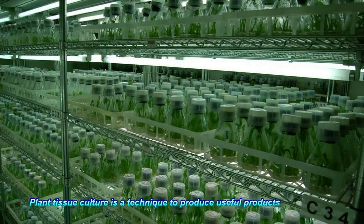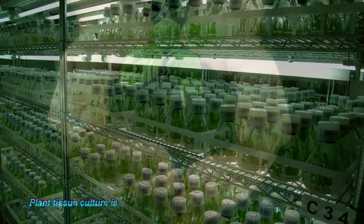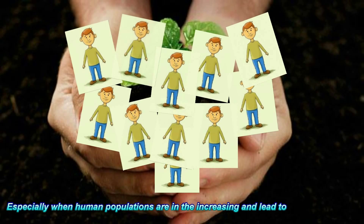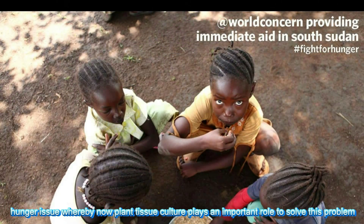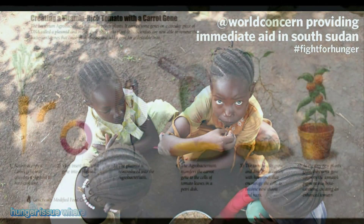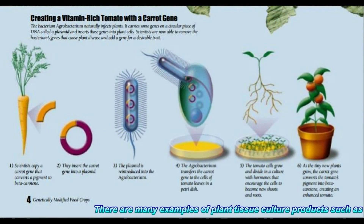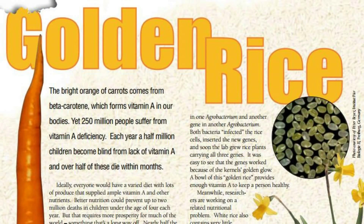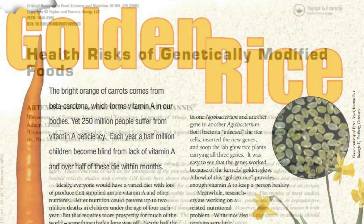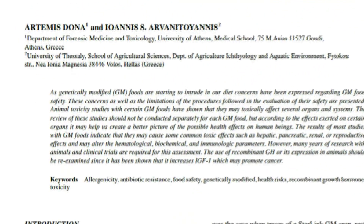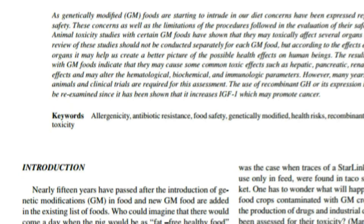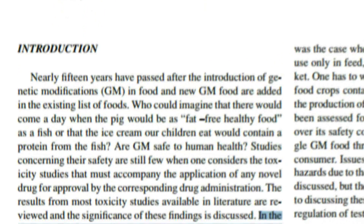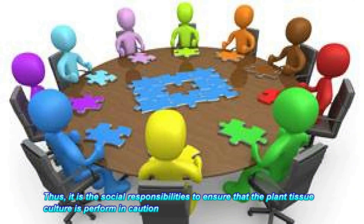Plant tissue culture is a technique to produce useful products for human needs, especially as human populations are increasing, leading to hunger issues — whereby plant tissue culture plays an important role in solving this problem. There are many examples of plant tissue culture products. It is a social responsibility to ensure that plant tissue culture is performed with caution.